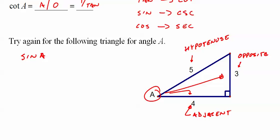So sine of A is opposite over hypotenuse, 3 fifths. Cosine of A is adjacent over hypotenuse, 4 fifths. Tangent of A is opposite over adjacent, 3 fourths. And that's it.